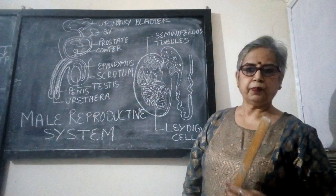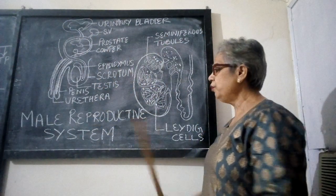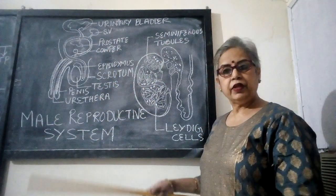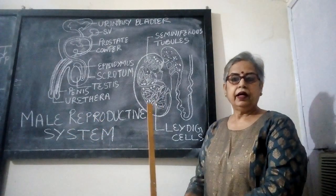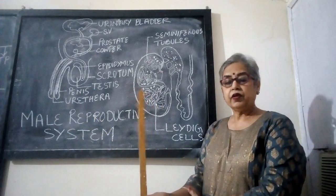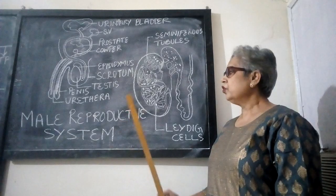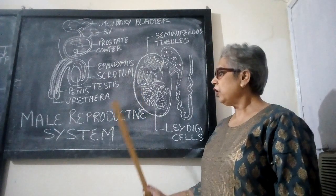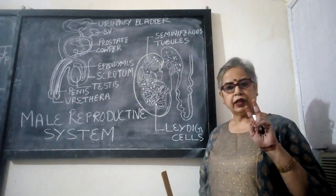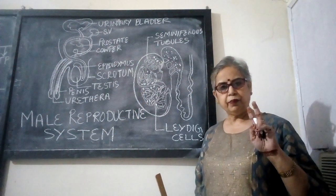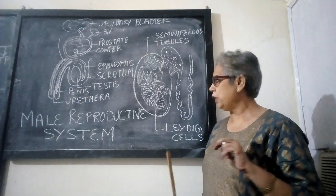Hello students, today's topic is the male reproductive system. When we talk about the male reproductive system, the first thing is what are the various parts. The parts of the male reproductive system are divided into two types: primary parts and secondary or accessory parts.